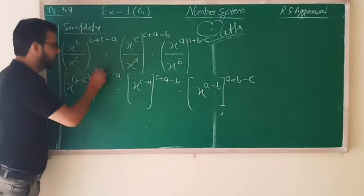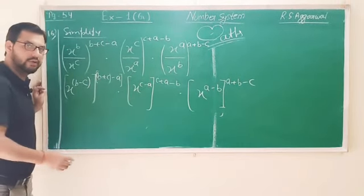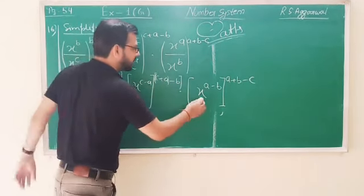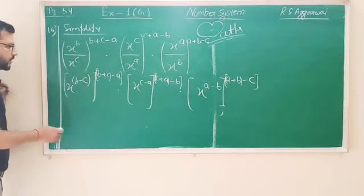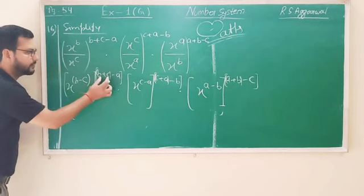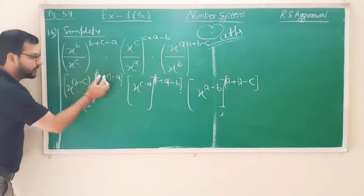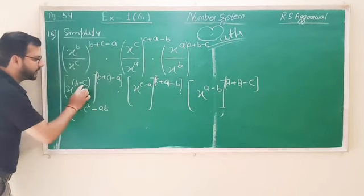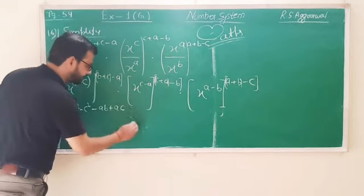Now b minus c, and the power is b plus c minus a. Same way, x to the power c minus a, and the whole power is c plus a minus b. Same way, x to the power a minus b. The power is a plus b minus c. Now solve. Power's power is multiply. But if we multiply directly, it will be lengthy. See, b minus c and b plus c. So here we use brackets.